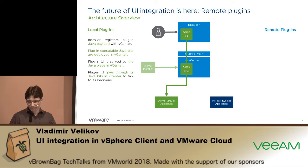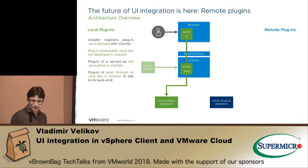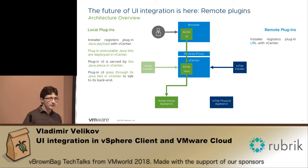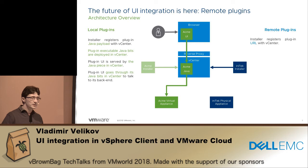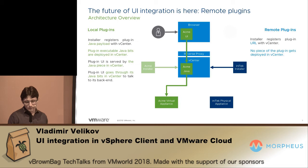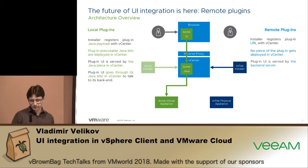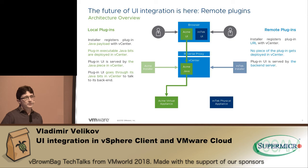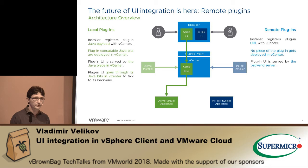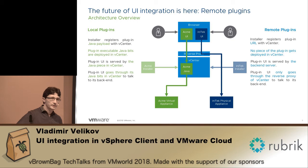So how do remote plugins change this? You again have a registration, but this time you don't register zips — you register just one plugin JSON manifest which only indicates the extensions that this plugin is going to show on the UI. There's nothing deployed on the vCenter, which is very important. When the user interacts with the UI, the UI is served directly from the backend server, and in the opposite direction the UI talks directly to the backend server through the reverse proxy of the vCenter.